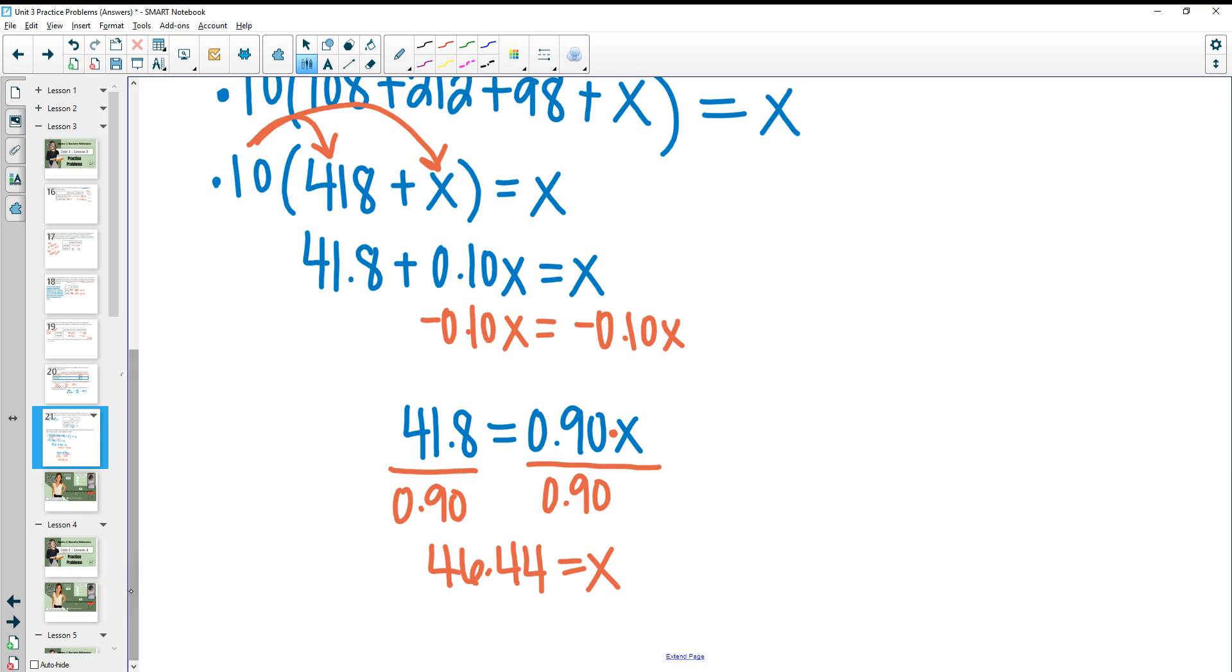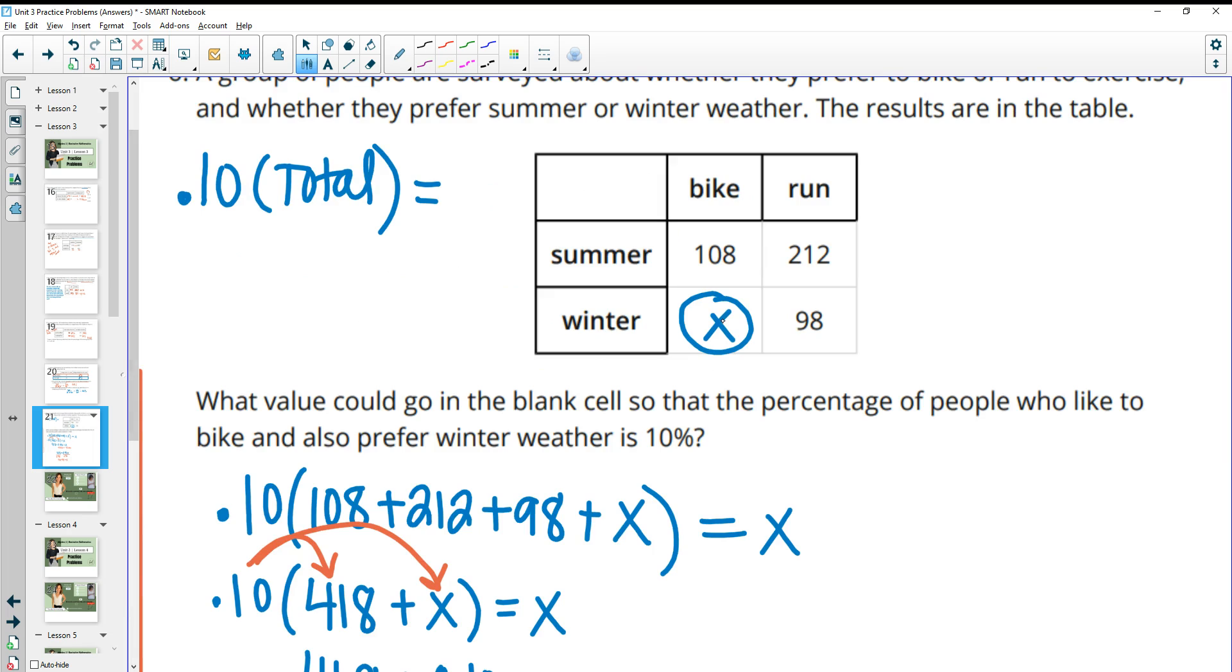So we would want to say, 46 or 47 would go in here. So if you want to round down and say 46, then that would give you about 10% there. And you could always try this out. So you could add 108 plus 212 plus 98 plus 46. This would give us a total of 464. And when we do 46 divided by 464, we get 0.099, which rounds to about 10%.